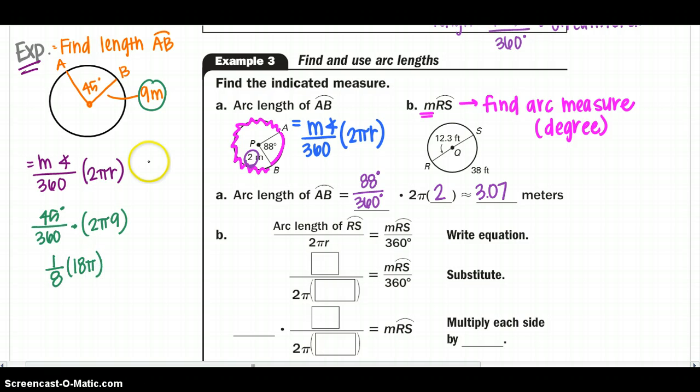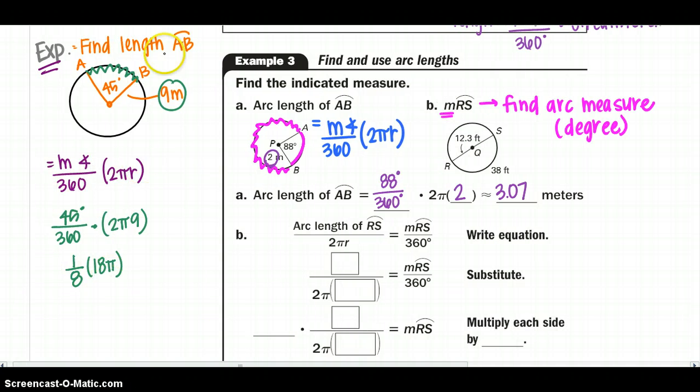So this is telling me that my arc length is 1/8 of my circumference. So that's kind of what this portion is telling you, pretty much the ratio or the proportion about it. So my answer would be 9 pi over 4, which is approximately 7.07 inches.